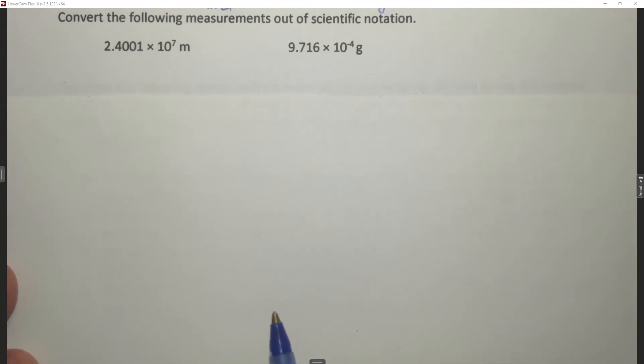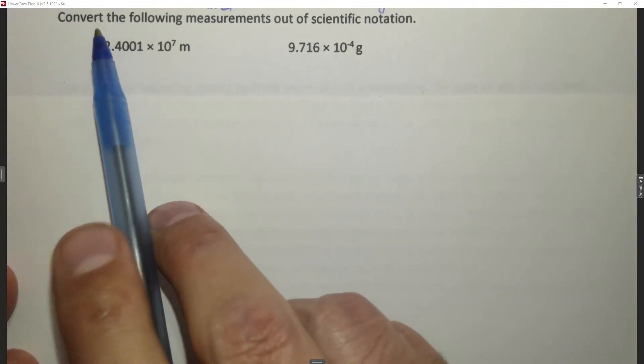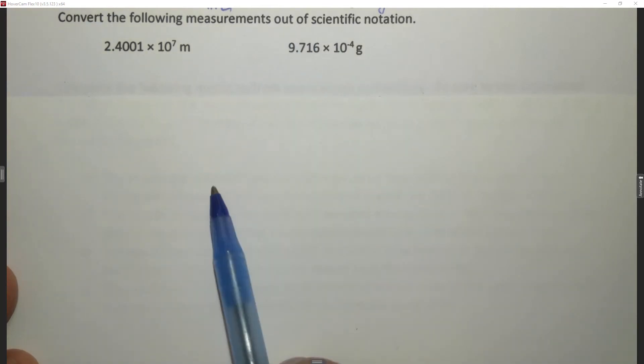In a previous question we talked about converting a number into scientific notation. In this case we're going to convert it out of scientific notation. So it says convert the following measurements out of scientific notation.